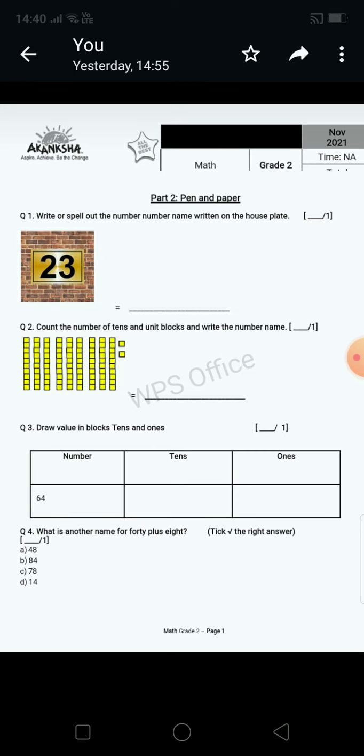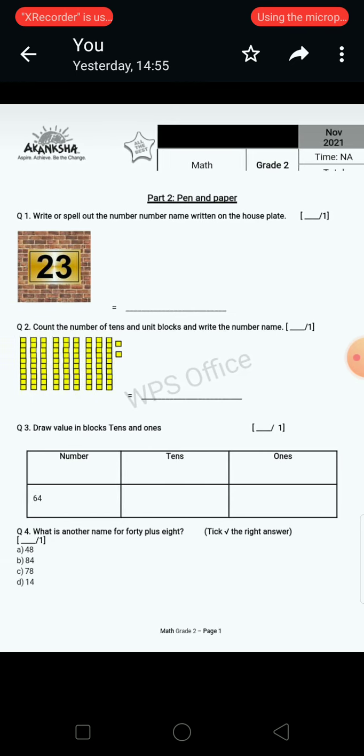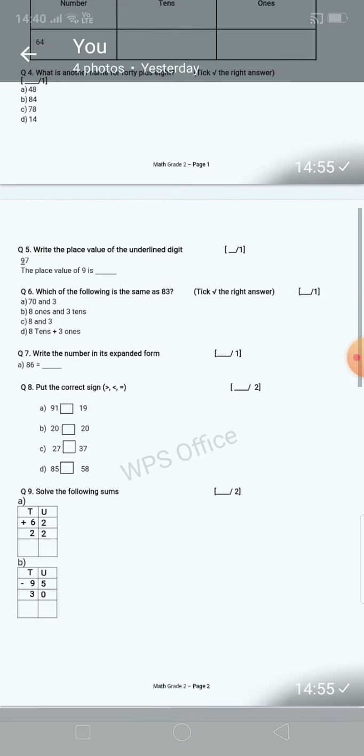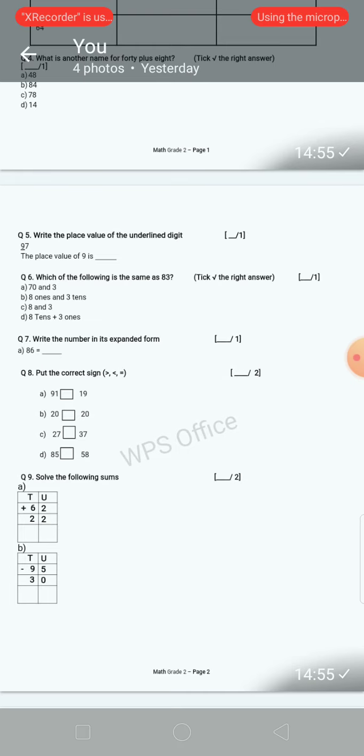Question number 5, first one is: Write the place value of the underlined digit. Which number is underlined? 9. So what is the place value of 9? You have to write here in that blank.